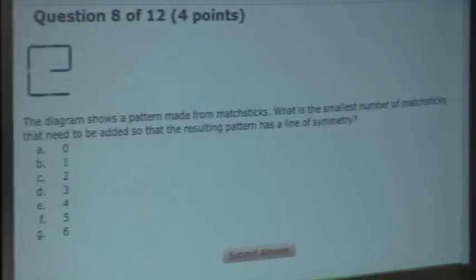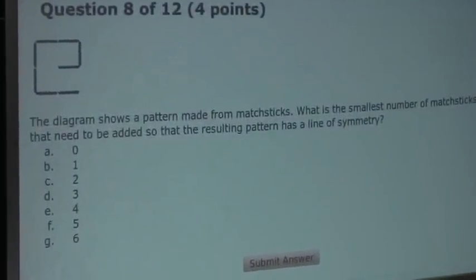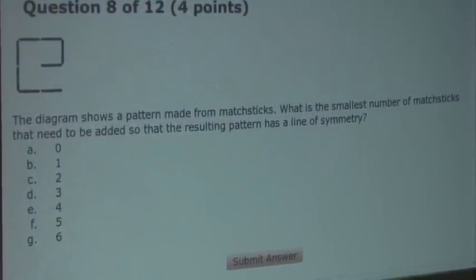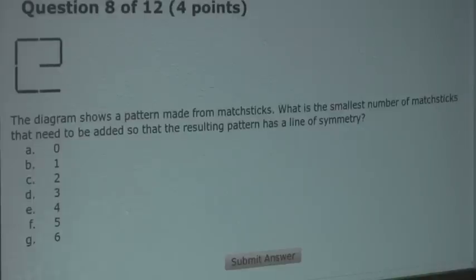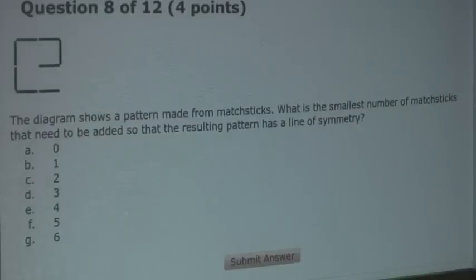The question is: the diagram shows a pattern made from matchsticks. What is the smallest number of matchsticks that need to be added so that the resulting pattern has a line of symmetry?